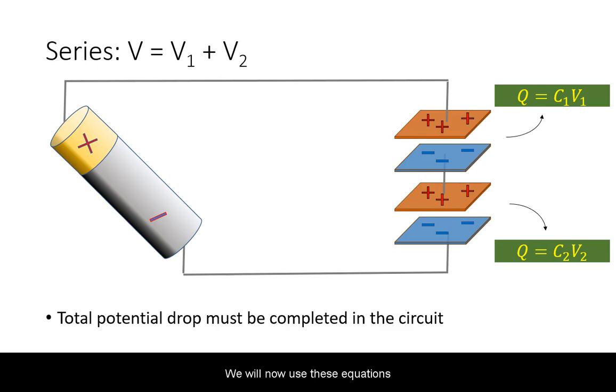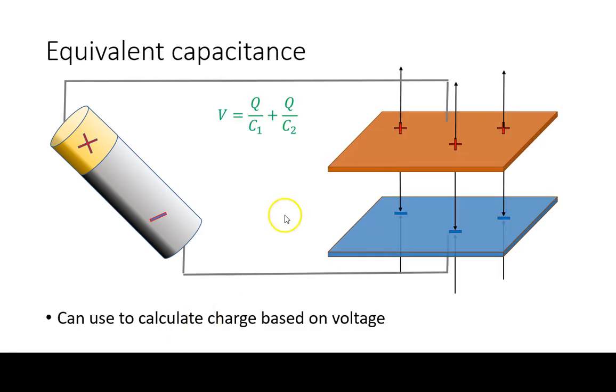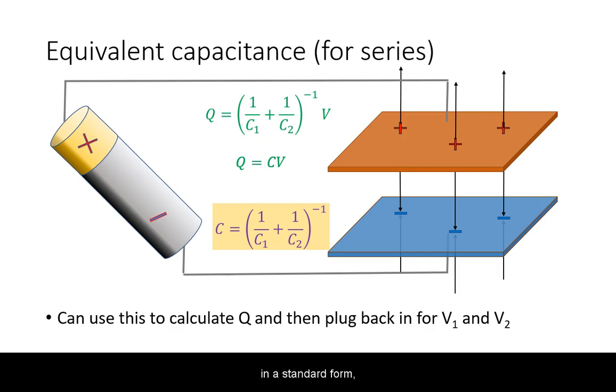We will now use these equations to derive an equivalent capacitance for the entire circuit. Total voltage equals the voltage of the first element plus the voltage of the second element. We factor out Q and rearrange the equation in a standard form, where now we can read off the proportionality constant that will be our equivalent capacitance.